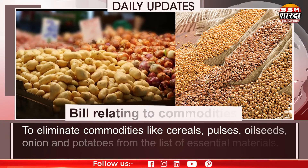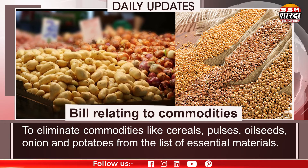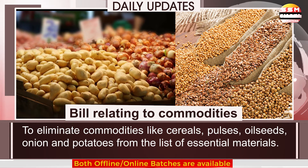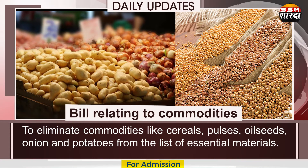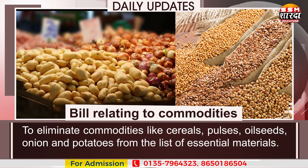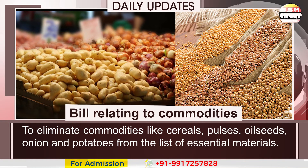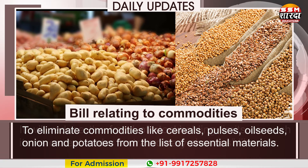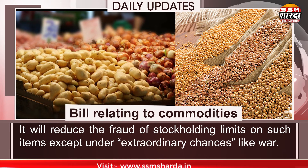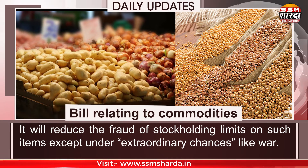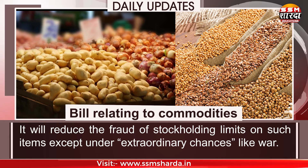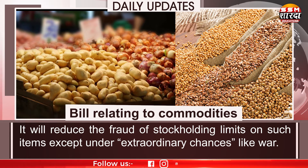Thirdly, the Essential Commodities Amendment Bill 2020. Provisions: to eliminate commodities like cereals, pulses, oilseeds, onion and potatoes from the list of essential materials. It will reduce the imposition of stock holding limits on such items except under extraordinary circumstances like war.